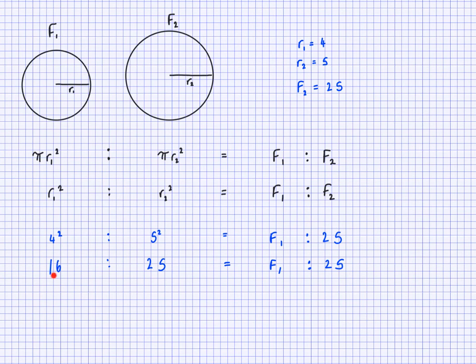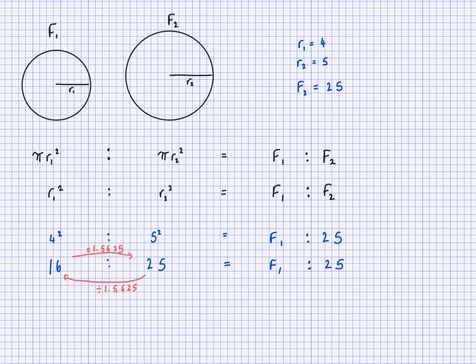The multiplication from 16 to 25 is 25/16 = 1.5625. So to go back, divide by 1.5625. Therefore F1 = 25 ÷ 1.5625 = 16. Note that we've already worked out the squares here, which is important if you're trying to find a radius instead.